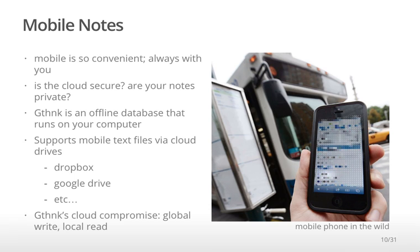Mobile note-taking is so convenient because you always have your phone with you. But one of the drawbacks of mobile is the dependency upon cloud resources, which raises the question: are your notes private? Is the cloud secure? GThink's solution is to keep its database offline — to run the GThink database on your computer and not expose it to the cloud. GThink will import notes from Dropbox or Google Drive, and each night it will import those notes and clean out the cloud files. No matter where you are on Earth, you can write to your journal, but in order to maximize security, you can only read from your journal when you physically have your computer.